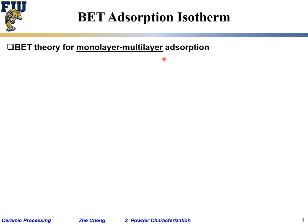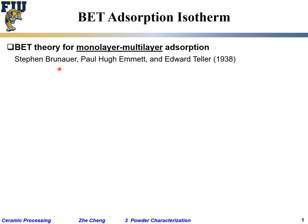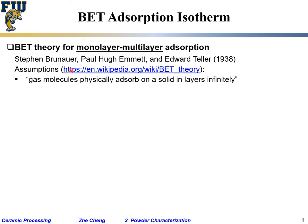Initially adsorption is monolayer, but once the first layer is complete, multilayer adsorption begins. The BET theory is also used for surface area analysis, as well as for pore size and pore volume distribution. The three scientists published their paper in 1938 and made certain assumptions when building this model.